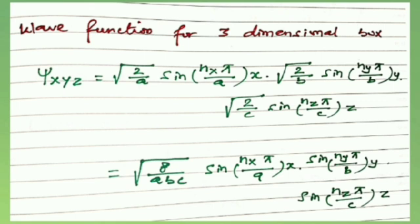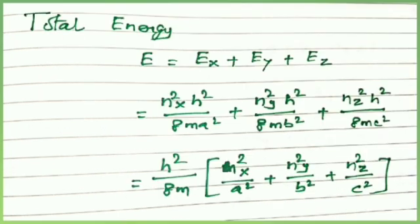For the three-dimensional box, the wave function ψ(x,y,z) = √(2/a) sin(nₓπx/a) · √(2/b) sin(nᵧπy/b) · √(2/c) sin(n_z πz/c), which simplifies to √(8/abc) · sin(nₓπx/a) · sin(nᵧπy/b) · sin(n_z πz/c).